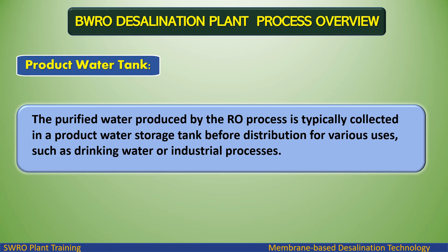The purified water produced by the RO process is typically collected in a product water storage tank before distribution for various uses, such as drinking water or industrial processes.